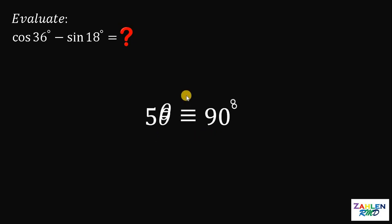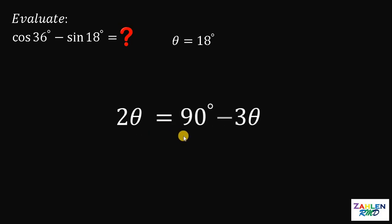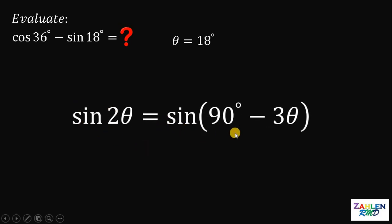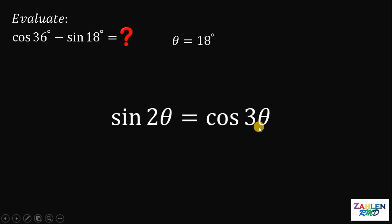The value of our theta must equal 18 degrees. Now, 5 theta can be written as 2 theta plus 3 theta. Let's subtract 3 theta on both sides, then take sine on both sides. So we have sine of 2 theta equals sine of 90 degrees minus 3 theta. Using the identity that cosine of A equals sine of 90 degrees minus A, the right-hand side becomes cosine of 3 theta.